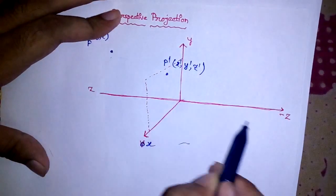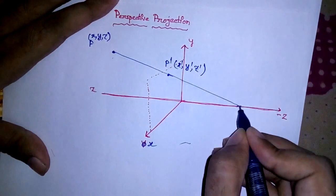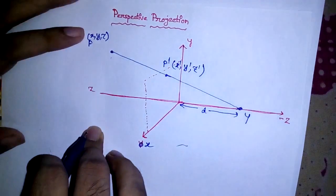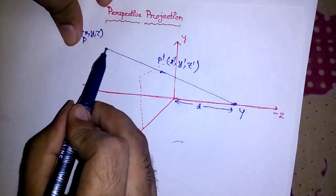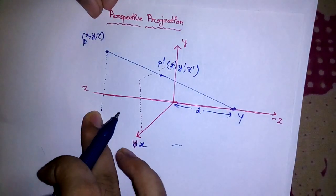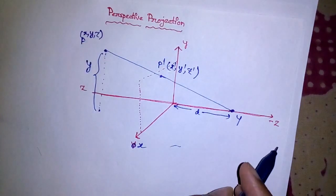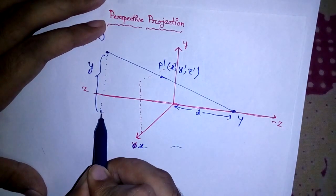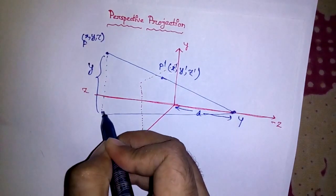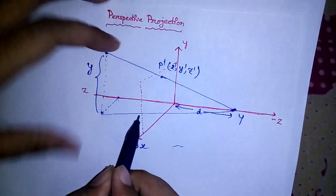All the rays coming out from this will converge at this point. I'm going to join this — let's say this point is Y and this distance is D. Now I need to find the values of X-dash, Y-dash, and Z-dash. If I draw a perpendicular to the ZY plane, I will get the Y value of this point — let's write this is Y. And if I draw a perpendicular to the Z axis, this distance is X.